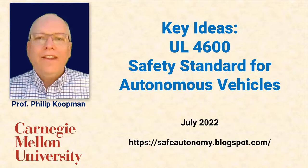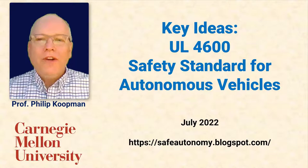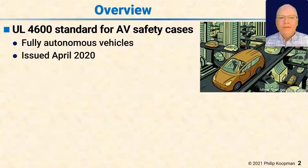Hi, this is Phil Kopman, and I'll be talking about key ideas for UL 4600, which is a safety standard for autonomous vehicles. The UL 4600 standard covers autonomous vehicle safety cases, including fully autonomous vehicles without a human driver. It was issued in April 2020.